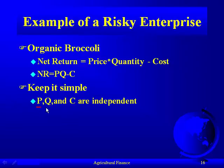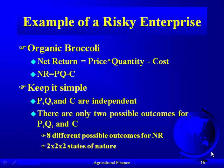We're going to say that price, quantity, and cost are all independent. We're going to say that in the broccoli industry, no matter how much broccoli you grow, it's not going to have one bit of effect on the price. We're also saying that cost isn't going to affect your quantity. All of those we can find exceptions to, but there are good reasons to keep those independent in this class.